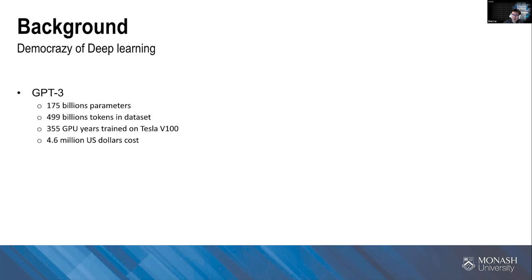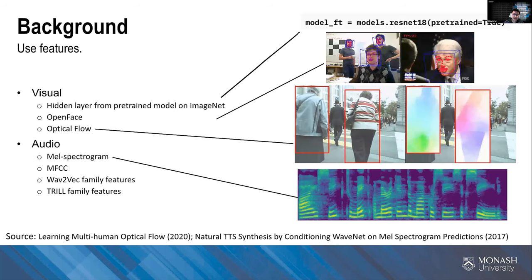So is there a better way to have both good performance and efficiency? One solution is using pre-trained or pre-extracted features. For visual data we can use some pre-trained models trained on ImageNet — cutting the last layer to get a sequence of numbers that may not be human-readable, but in other feature types they might be meaningful. For example, OpenFace extracts landmark locations of the face.